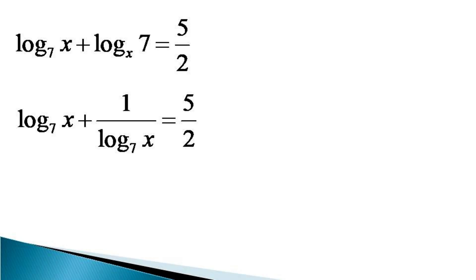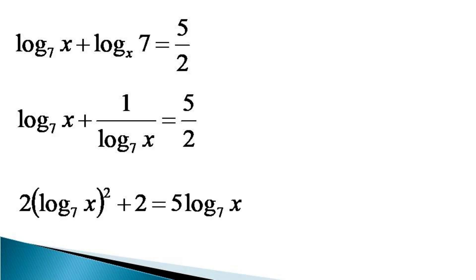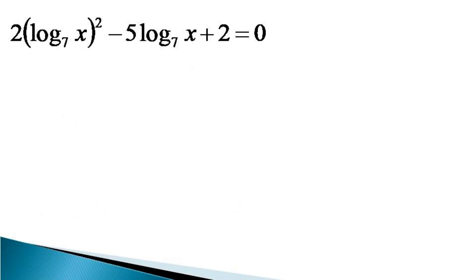To linearize this equation, we multiply both sides by 2 into log x to the base 7, which makes the equation 2 into log x to the base 7 whole square plus 2 is equal to 5 into log x to the base 7. All the terms are brought on one side to get 2(log x to the base 7)² minus 5 log x to the base 7 plus 2 is equal to 0.